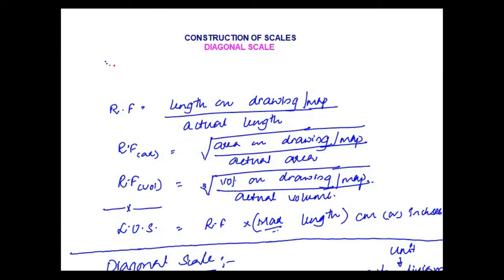Hello everyone. Today we are going to discuss construction of diagonal scale. In the last class we have seen construction of plain scales where we can show a unit and its immediate subdivision. In diagonal scale we can show a unit and its two immediate subdivisions — a unit, its subdivision, and its subdivision. Before we go for construction of diagonal scale, let us review the representative factor and length of scale which we use in each and every scale.